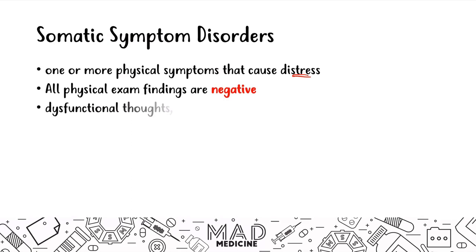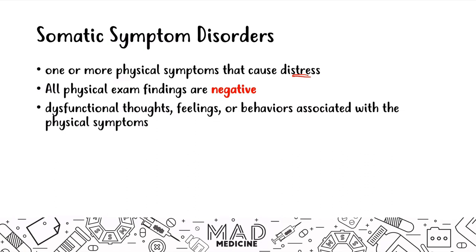This may lead to dysfunctional thoughts, feelings, and behavior. Eventually, if this happens for a long enough period, it can lead to MDD — major depressive disorder — and that can also progress to suicide. Often in the USMLE Step 1 vignettes, you may have a patient who presents with symptoms that have been occurring for a long time and may be contemplating suicide. That should be a key giveaway for somatic symptom disorder.